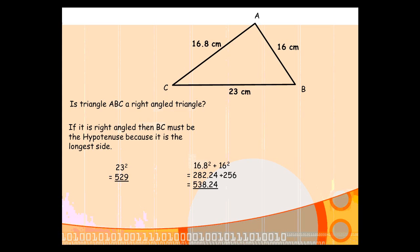It's not enough to leave your solution like this. You have to make a conclusion based on your findings. So, in a statement, say that since 23 squared is not equal to 16 squared plus 16.8 squared, the triangle is not right-angled. You need some sort of a conclusion based on the work that you've carried out up to that point.